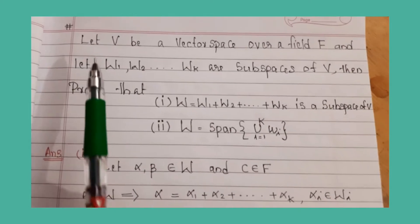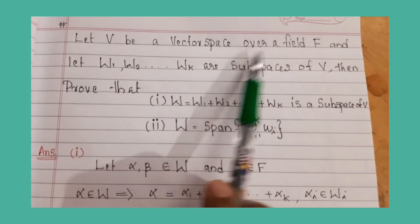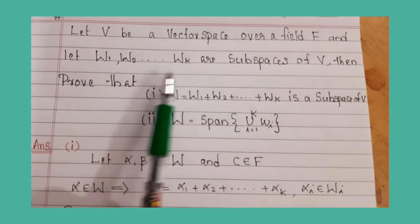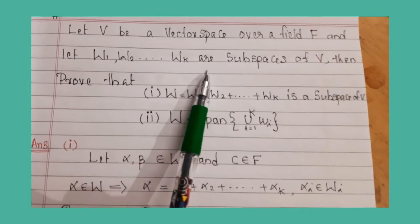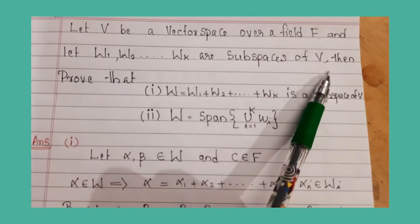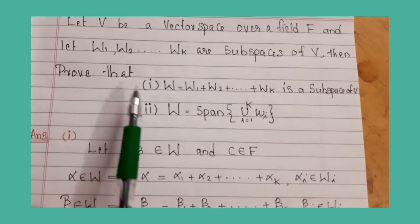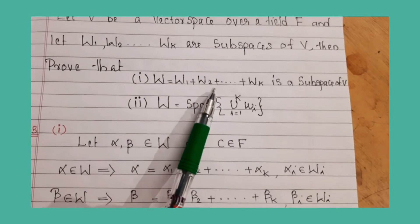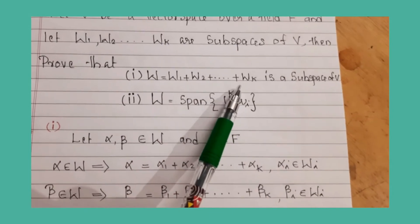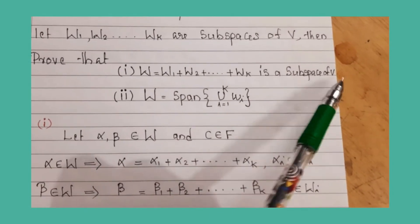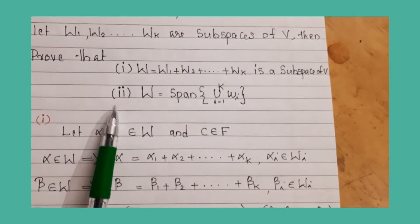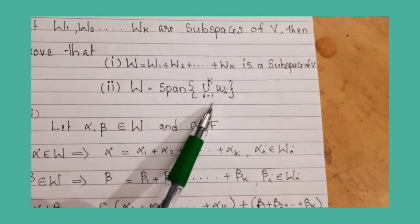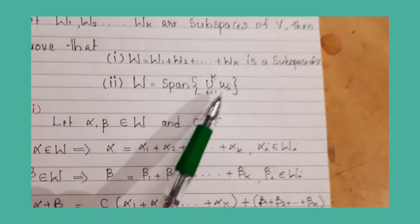Next problem: Let V be a vector space over a field F, and let W1, W2, ..., Wk be subspaces of V. Prove that: (1) W = W1 + W2 + ... + Wk is a subspace of V, and (2) W = span of the union of Wi for i running from 1 to k.